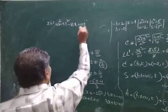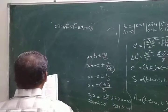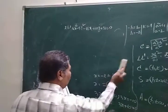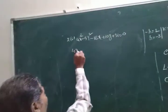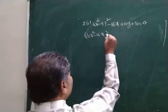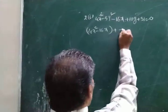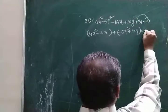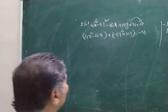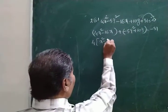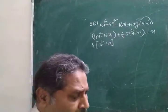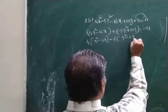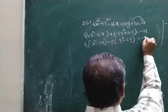The equation is: 4x squared minus 16x minus 5y squared plus 10y plus 31 equals 0. Take the x squared and x terms together: 4 into x squared minus 4x. Take minus 5 common for the y terms: y squared minus 2y, equal to minus 31.